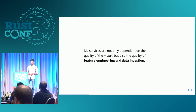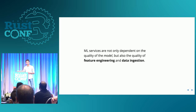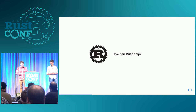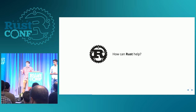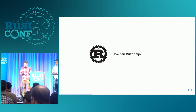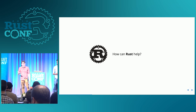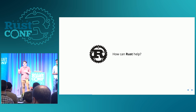Machine learning services are not only dependent on the quality of the model, but also on quality of feature engineering and data ingestion. Before tweaking model parameters, you need to make sure your features and data are reliable, safe, and consistent. So where does Rust fit in? Rust is a systems programming language — low-level but high-level too. What makes Rust a great systems language — the safety and high-level abstractions — also helps us pay down tech debt quickly. We wanted to see what happens when we apply Rust to the machine learning data science process.